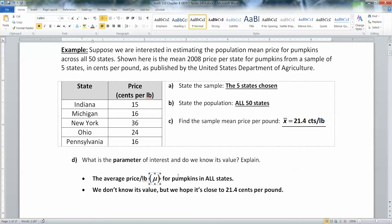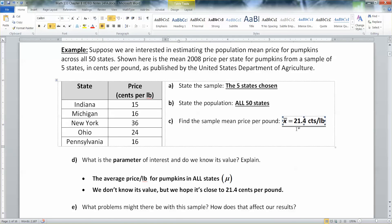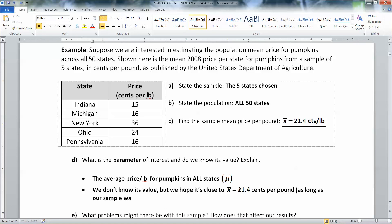For all the pumpkins in all 50 states. Actually, you know what? I want to put the mu part at the back just to remind you guys that this is a mu. We don't know what its value is, but we do hope that it's close to x bar. As long as our sample was random and unbiased.